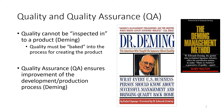One of Deming's main principles was that quality cannot be inspected into a product — you can't look at the product after it's been built and improve it. Quality must be baked into the process for creating the product. He emphasized improving the quality of the product by making changes to the process. The whole topic of quality assurance is to ensure improvement in the development and production process.